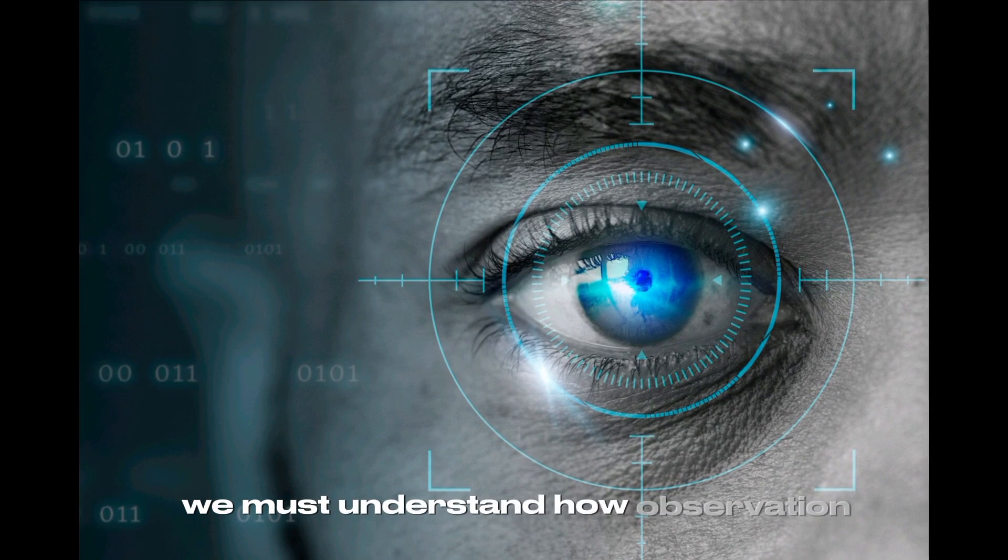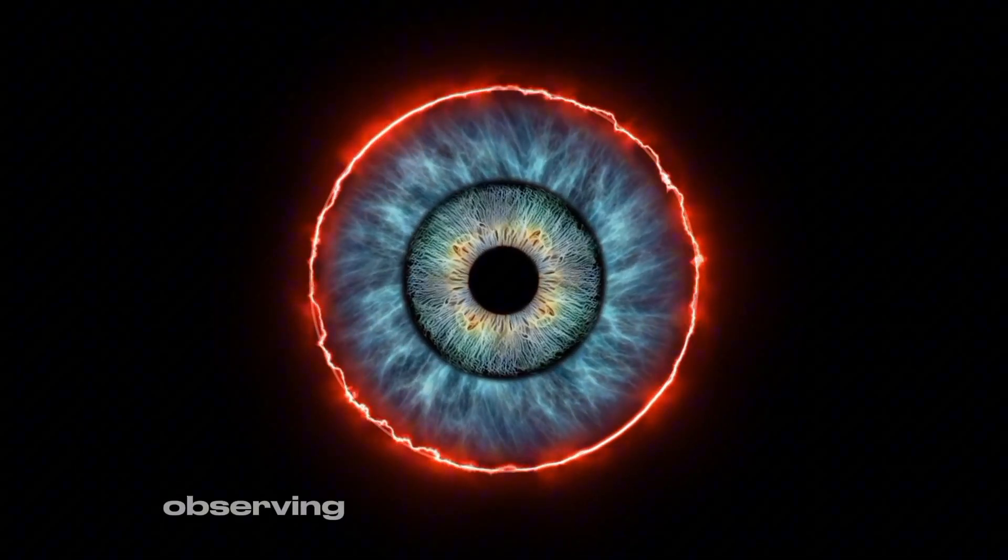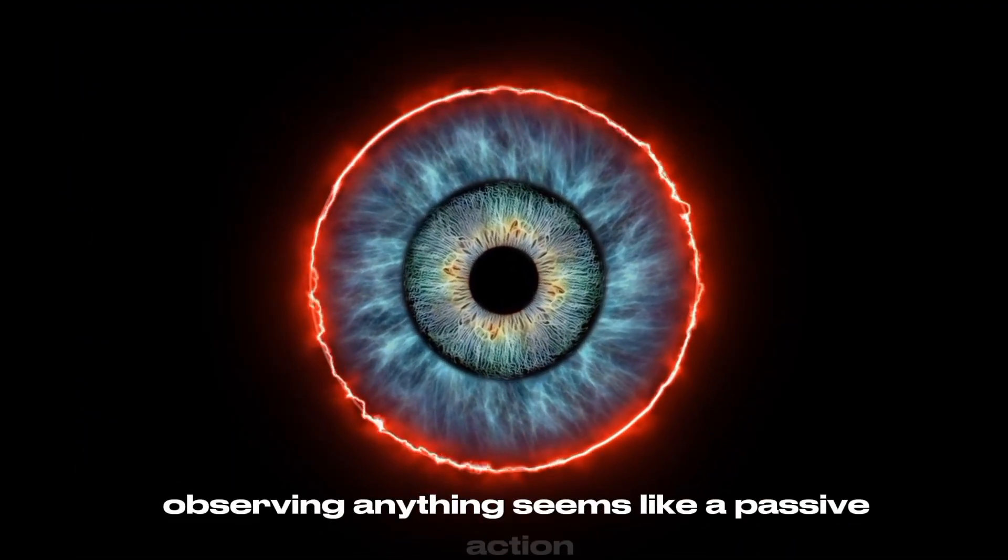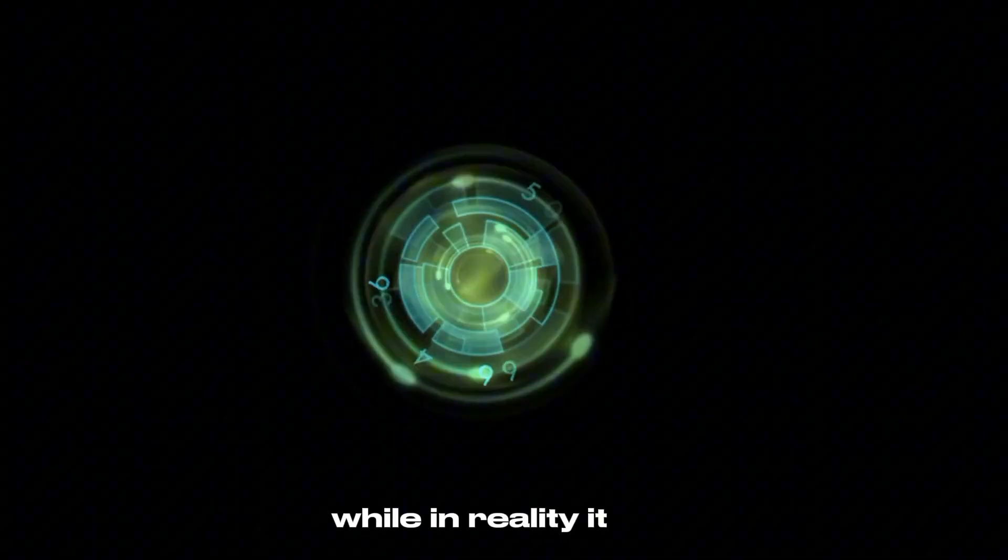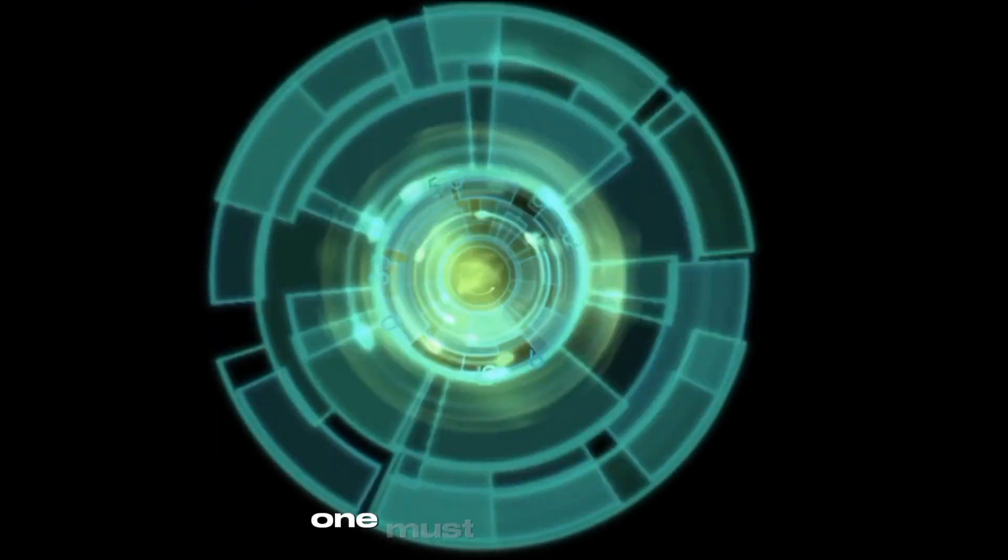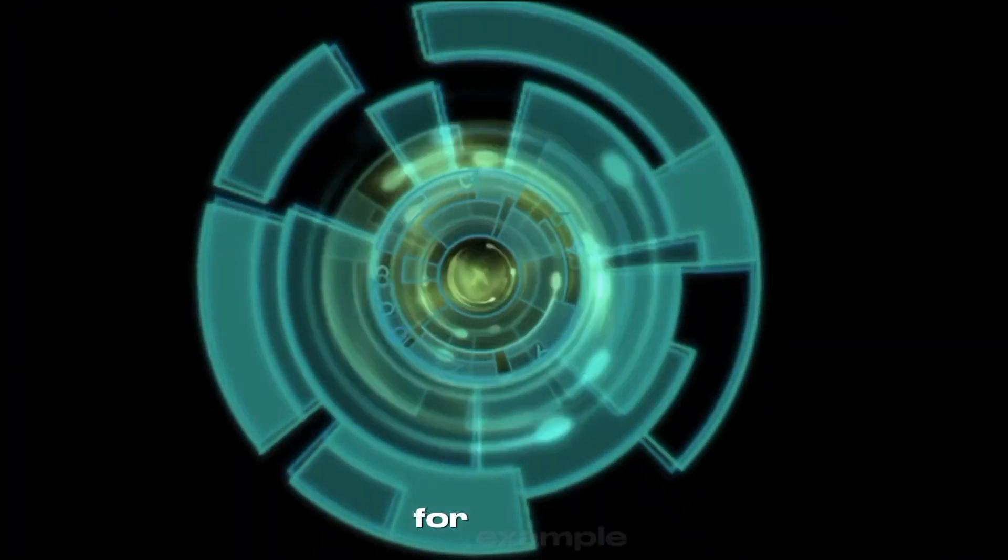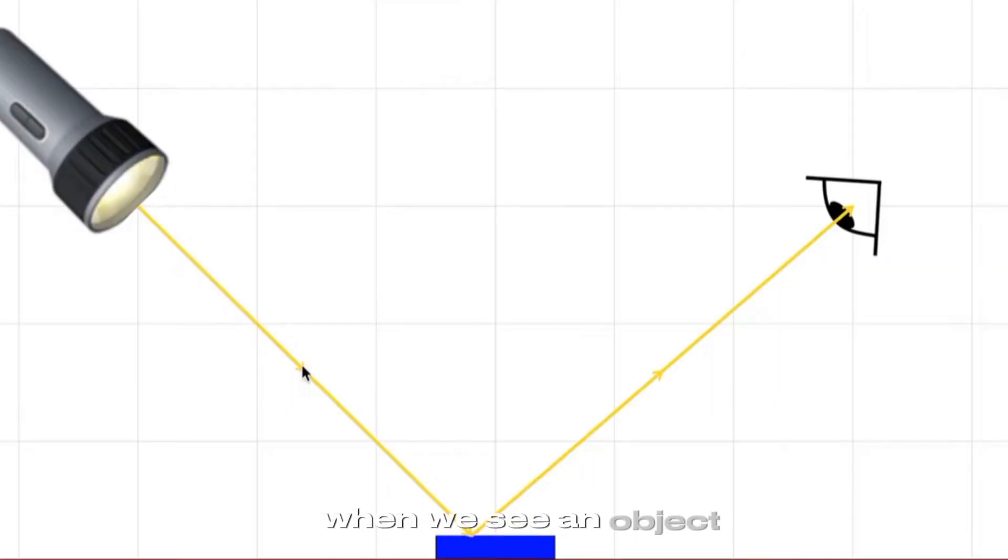To understand it further, we must understand how observation works. Observing anything seems like a passive action, while in reality, it is not. To observe a thing, one must interact with it. For example, when we see an object, it is only visible to us because a light ray bounced off it to our eye.